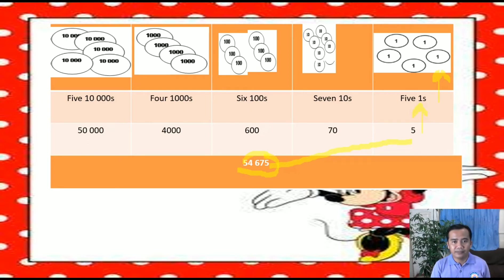Next, 7 is in the 10's place, meaning 7 tens equals 70. So draw 7 tens disks. Next, we have 6. Six 100's is equivalent to 600, so draw 6 hundred disks. Next is 4. We have 4 thousands, which is equivalent to 4,000. So draw 4 one-thousand disks.